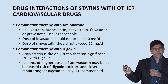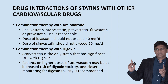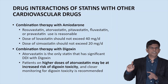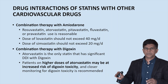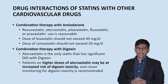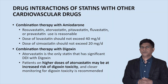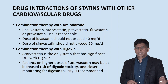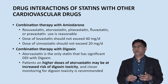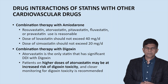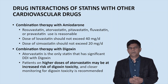Let's look at combination therapy with amiodarone. Rosuvastatin, atorvastatin, pitavastatin, fluvastatin, and pravastatin are reasonable to use with amiodarone. When you use lovastatin, don't exceed 40 mg. For simvastatin, you can only use 20 mg — very important. A lot of patients are on amiodarone, so be careful with these dose limits.